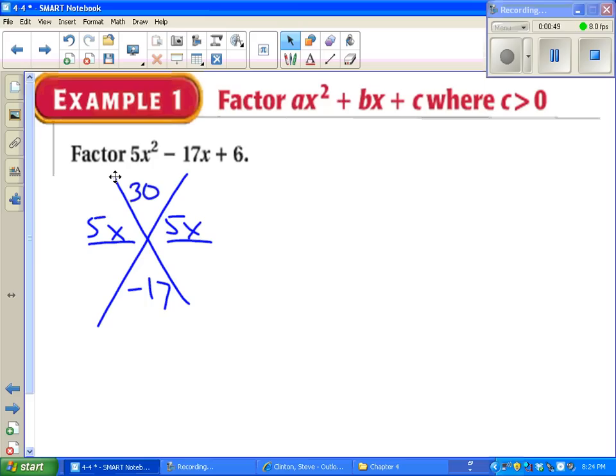The only part that requires some thinking is two numbers that multiply together to give 30 and add together to give negative 17. After making a list or thinking it through, you come up with your two numbers.